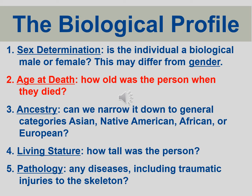We use a chronological method because terms like 'adult' are culturally variable. In the United States, adult means 18 years old, which affords rights like a driver's license, voting, and purchasing alcohol or tobacco. These are distinct from biological age categories. After covering age at death, we'll move through ancestry, living stature, and hopefully pathology.